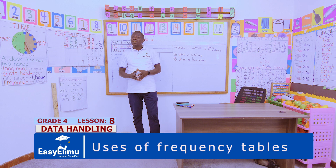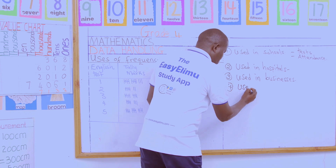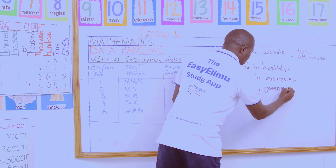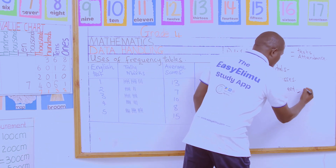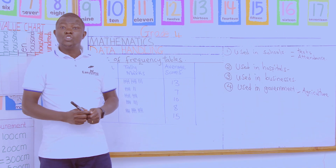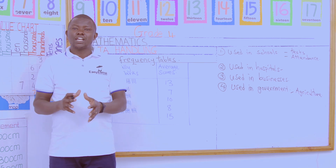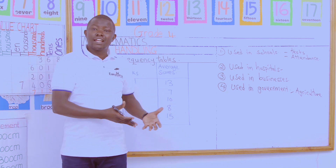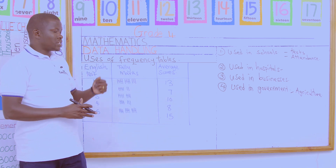Finally, frequency tables are also used in government in different ways. For example, in agriculture: the government can use frequency tables to know what type of pest is more prone to certain areas, and what type of seeds they are supposed to supply in a certain climatic region. Both of these will use frequency tables.